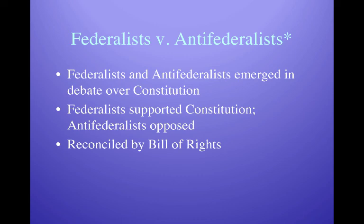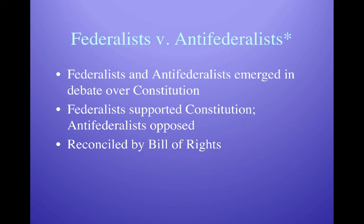Before the Constitution was ratified, we have the first proto-political parties: the Federalists and the Anti-Federalists. These were not political parties in the sense they exist today — they were basically two separate groups with different ideas about the Constitution. The Federalists wanted to ratify the Constitution without a Bill of Rights; the Anti-Federalists wanted to include one. Federalists included Alexander Hamilton, James Madison, John Jay, and John Adams; Anti-Federalists included Thomas Jefferson and Patrick Henry. Ultimately the Bill of Rights was added, both sides ratified it, and we got a new political system.